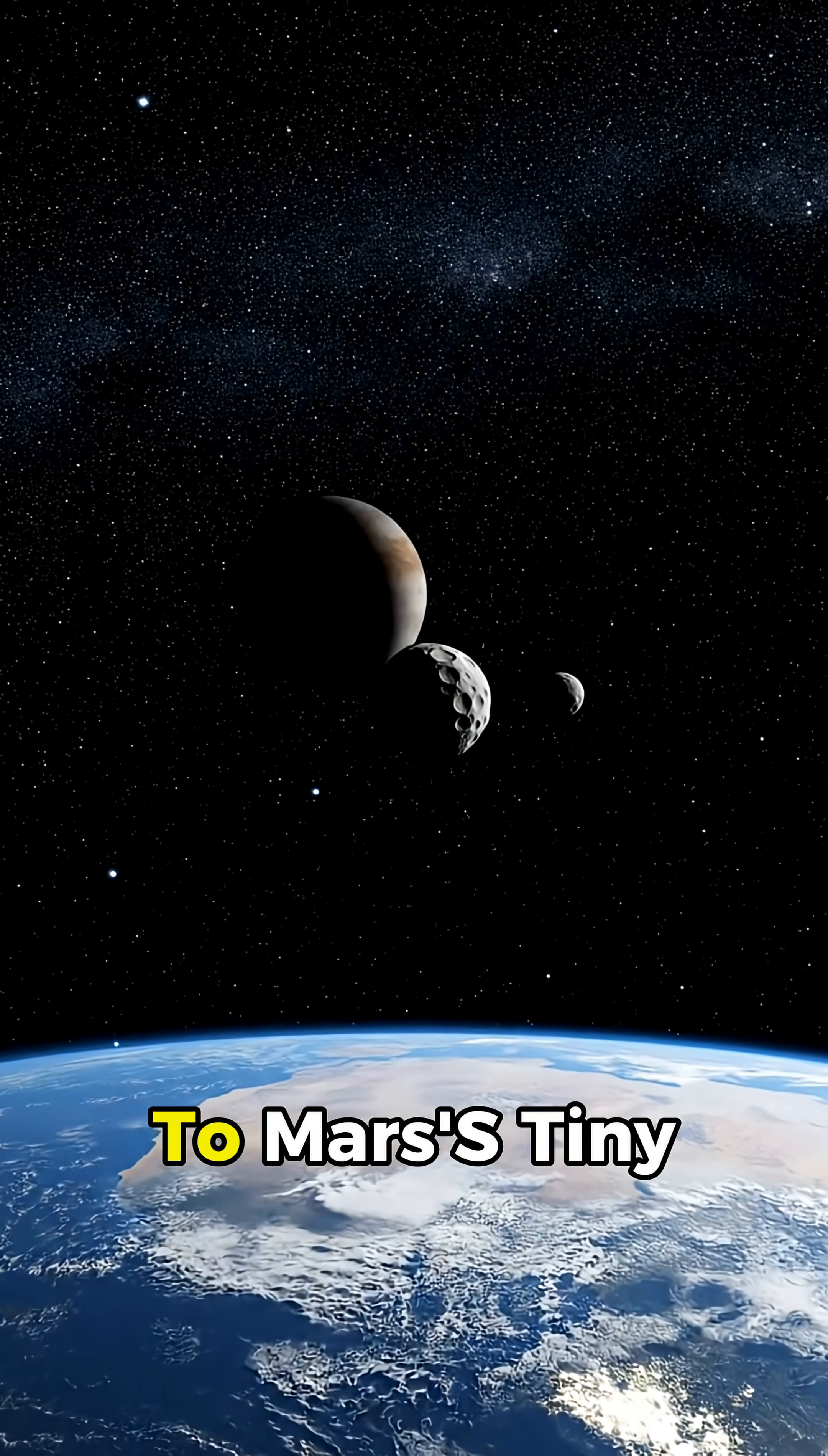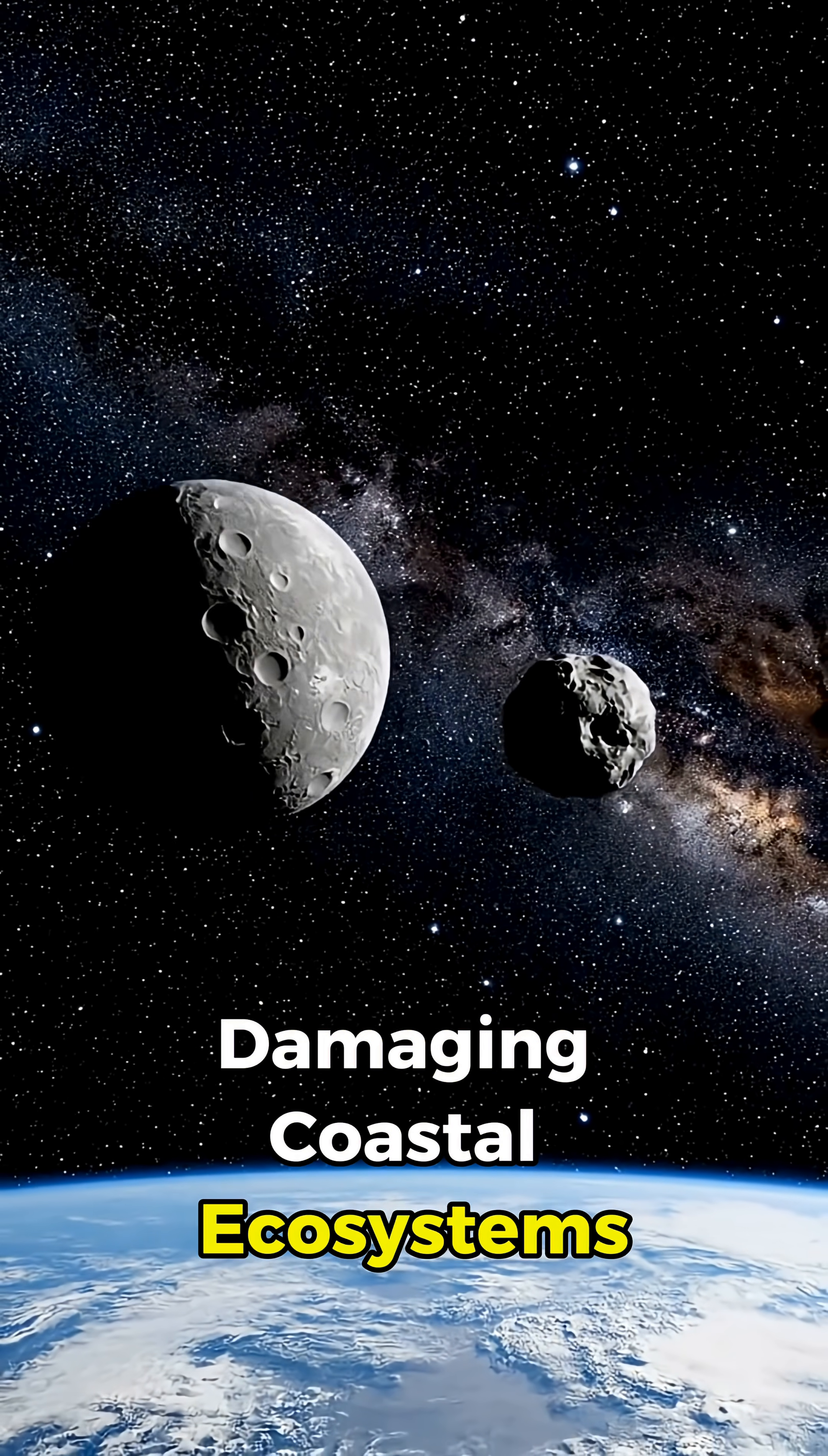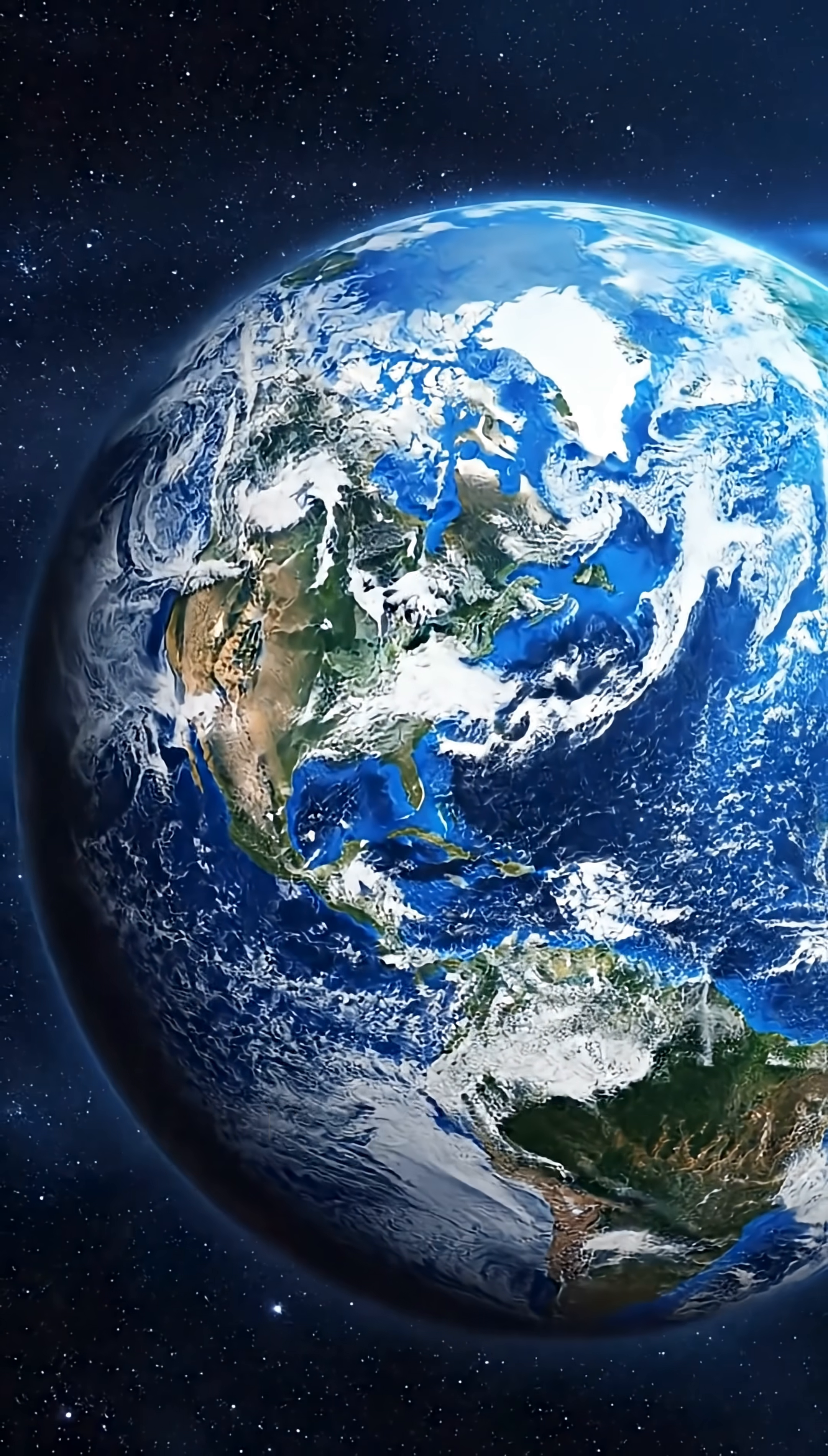Finally, imagine downsizing to Mars' tiny moons Phobos and Deimos. They're so small they'd barely light the night sky. Tides would almost vanish, damaging coastal ecosystems. And over millions of years, Earth's axis could wobble wildly, potentially flipping climates so much that icy poles and warm tropics could switch places.